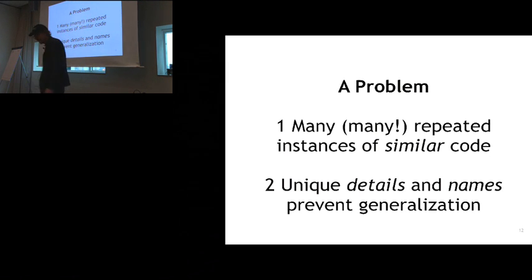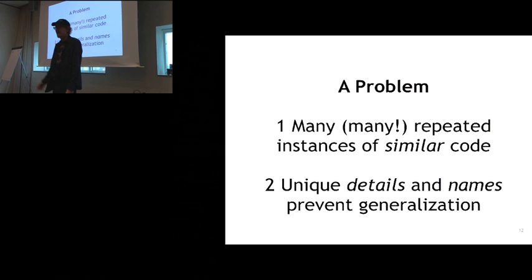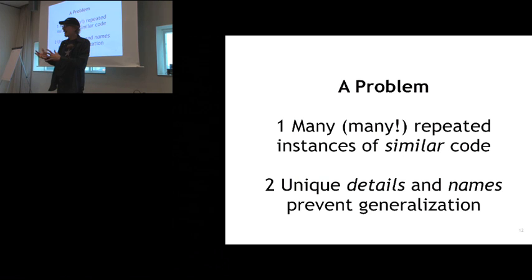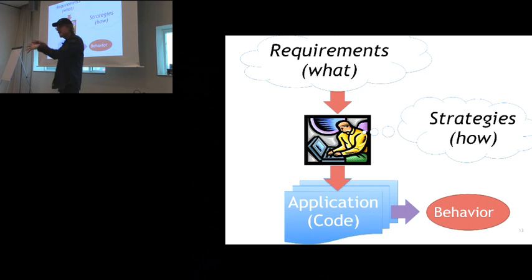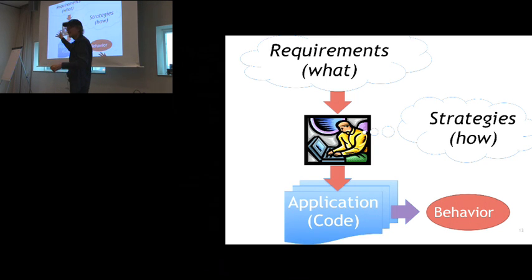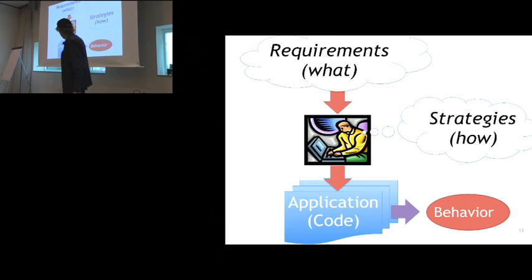I'm interested in the problem of writing many, many repeated, similar pieces of code. How many people have ever written the same, similar piece of code before? It's quite common — the names change and the constraints change, but the basic structure of the code remains the same over and over again. Here's one way of looking at this: there's requirements, which is what you need to do. Everyone sits in the room and figures out the requirements, then we figure out strategies for how to solve it, then we write the code. That's a fairly standard approach, and then you get behavior.